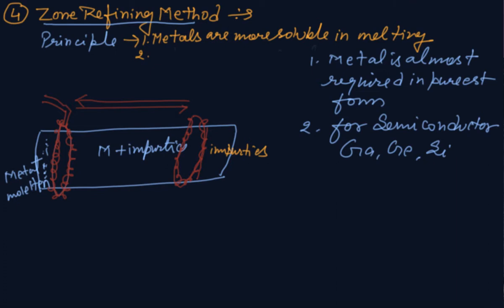When metal is required in almost pure state, metals like gallium, germanium, which are used as semiconductors are purified by this method. It is based upon the principle: when an impure metal in molten state is allowed to cool, only the metal crystallizes while the impurities remain in molten state. Upon cooling, metal becomes crystallized and impurities go to one end separately.